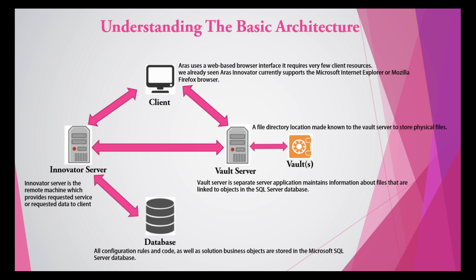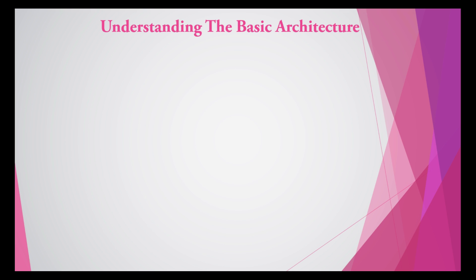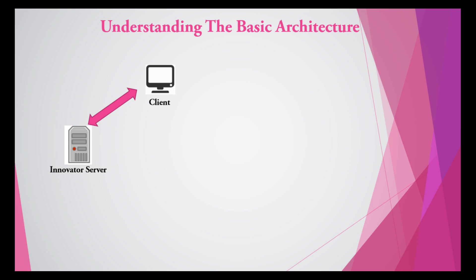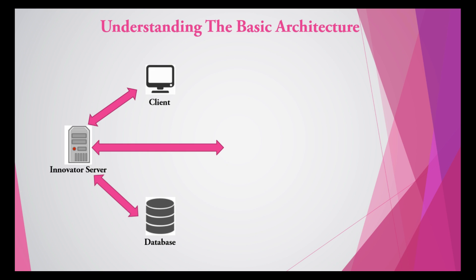Now let's see how the architecture works. The client — our browser — requests data from the Innovator Server. For example, if we request an item type called 'Part', that data is checked in the database and processed. If part-related files are also required, those files are checked in the Vault Server. The Vault Server manages file-related data, retrieves the file from the vault, and sends it back to the client.